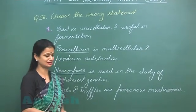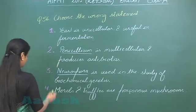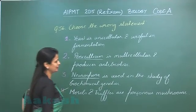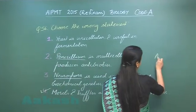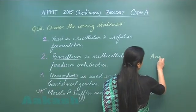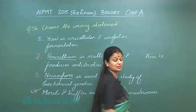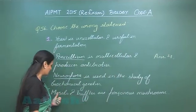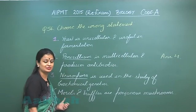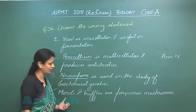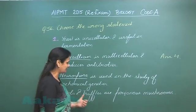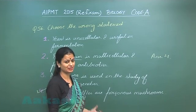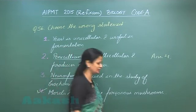Option four states that morels and truffles are poisonous mushrooms — this is wrong. These two are edible mushrooms which belong to Ascomycetes. So the answer is option number four. The scientific name of morel is Morcella and truffles is Tuber estivum.